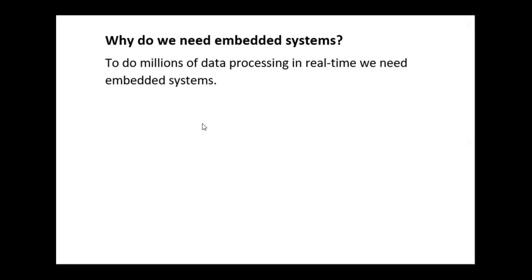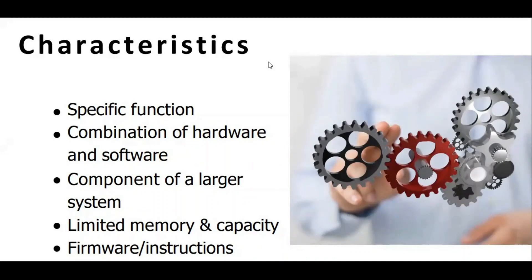What are the characteristics of an embedded system? Embedded systems have very dedicated features. The memory capacity is limited. This limited capacity is used for firmware and instructions.